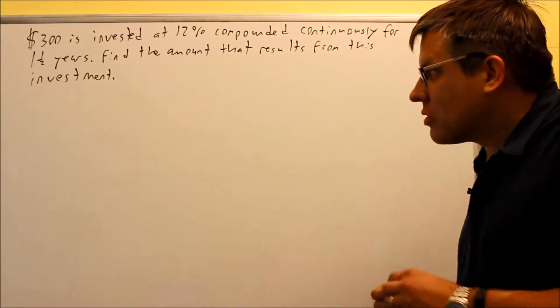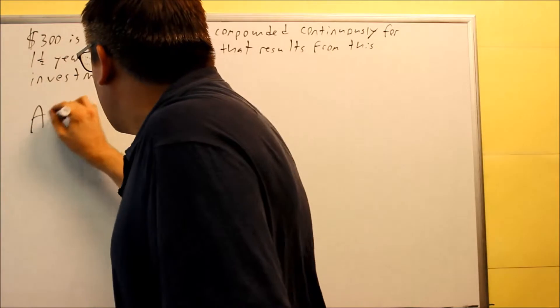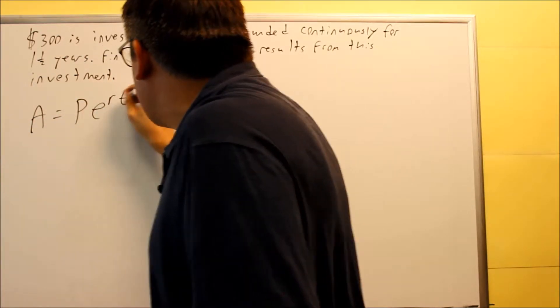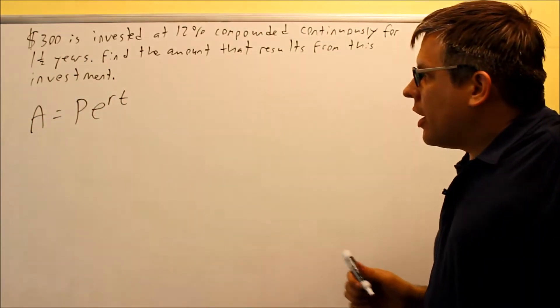So we don't have an N in this case. The formula is going to be this one: A equals P times E to the RT. So for that one, we don't have N in this case.